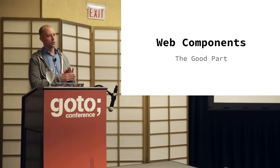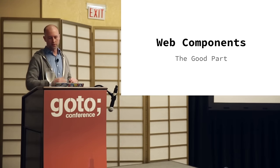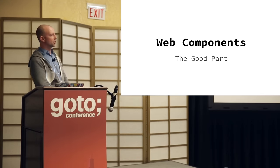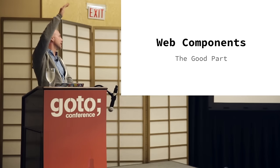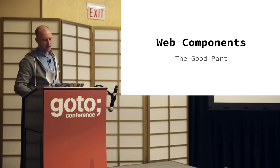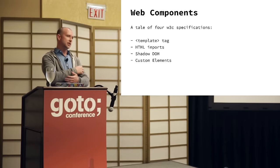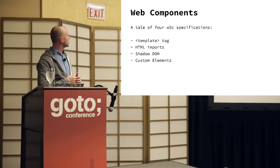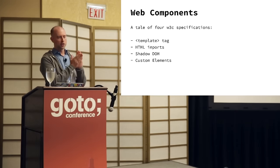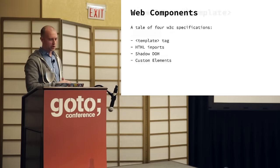So this is the part where I'm going to go through Web Components themselves. Web Components is a blanket set of specifications for four different things: the template tag, HTML importing, the Shadow DOM — which sounds way cooler than it is — and custom elements. Let's go through these.